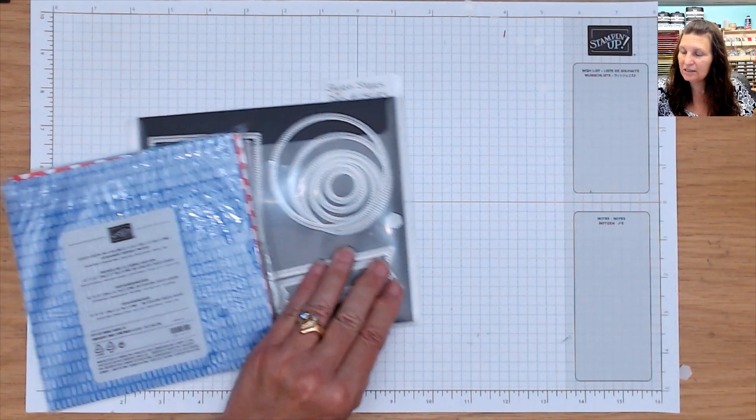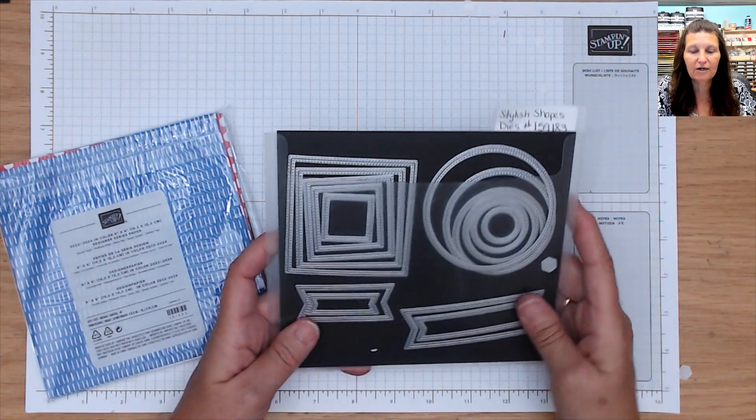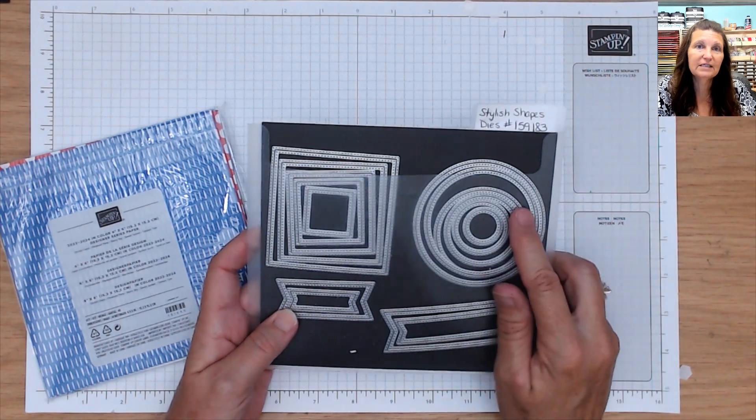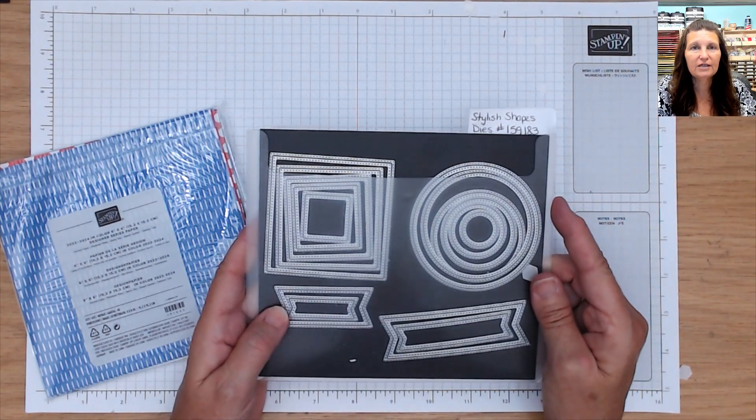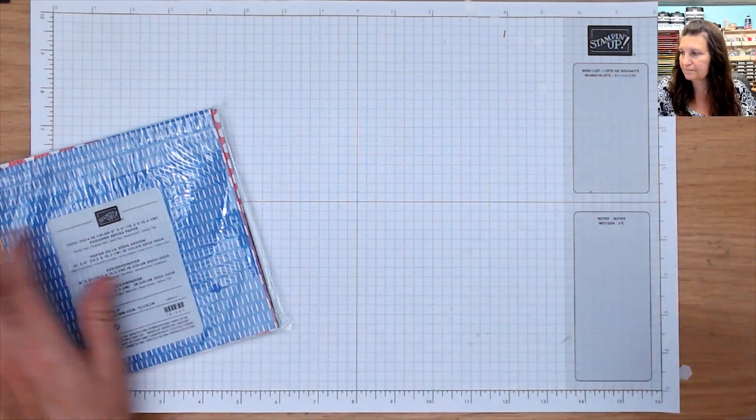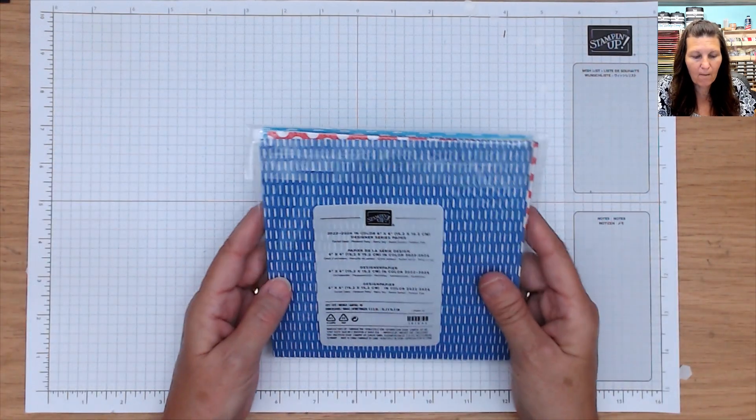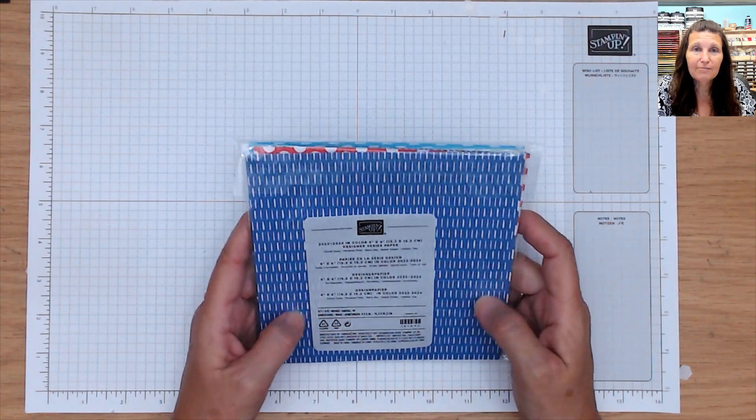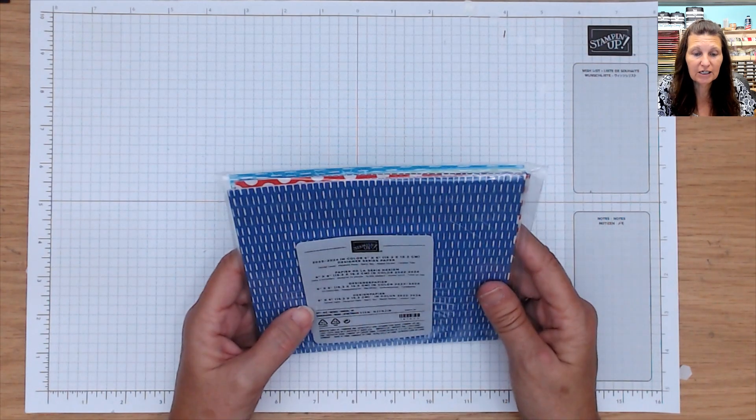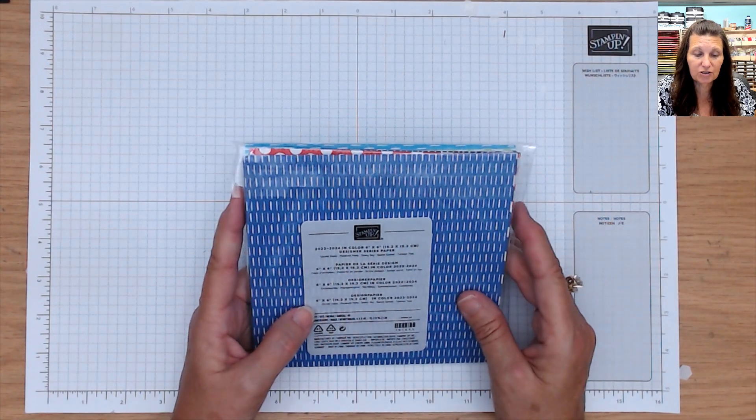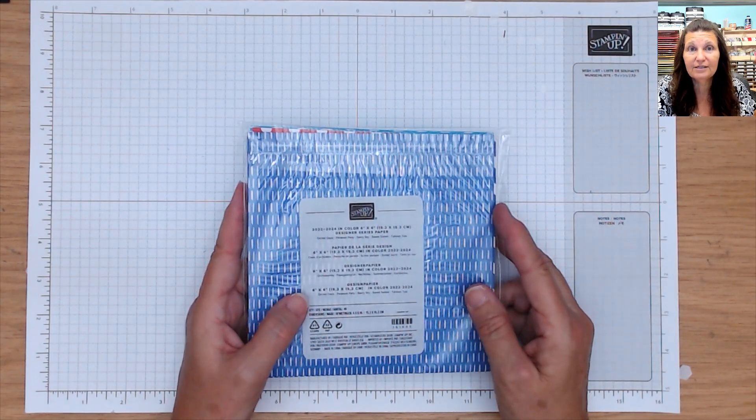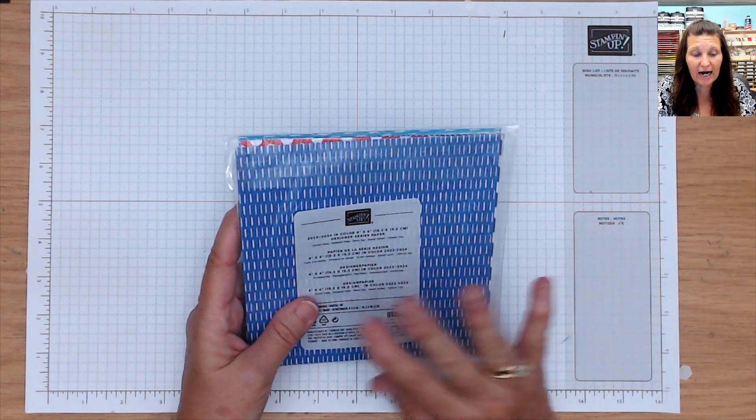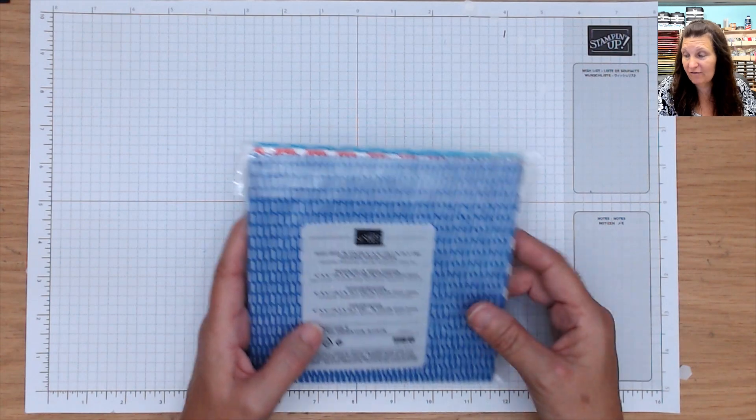I am also using the Stylish Shapes dies. Now this, for the technique that I'm going to be doing, the fun fold, this is necessary. So you're going to need the Stylish Shapes dies. And I pulled out my 2022-2024 in-colors. And I'm going to show you in two of these in-colors. Actually, three because I'll show you one at the end and another one of the in-colors. But I thought they turned out so darn cute. I think it would be so cute in all five of these colors.